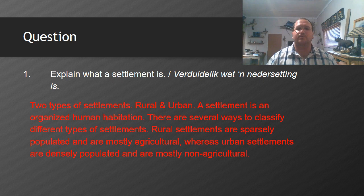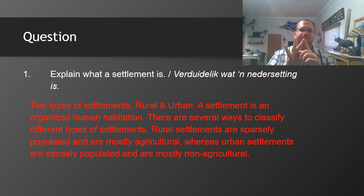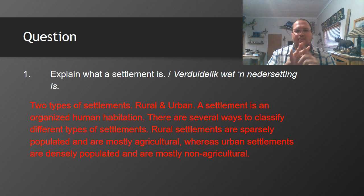Urban settlements are densely populated and mostly non-agricultural — this is usually our service industry. We discussed this before when we looked at trade and transport. We get three main types of activities: primary, secondary, and tertiary. Primary is agriculture and mining — getting natural resources and the raw product. Secondary is manufacturing — taking the raw product and making something from it, like cutting down a tree to make a table. Tertiary is the service industry: schools, doctors, shops — where you sell that table.